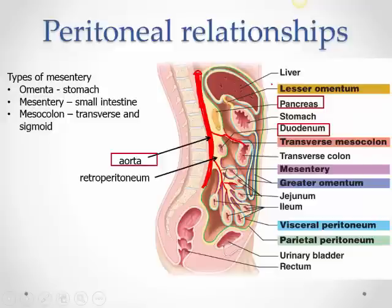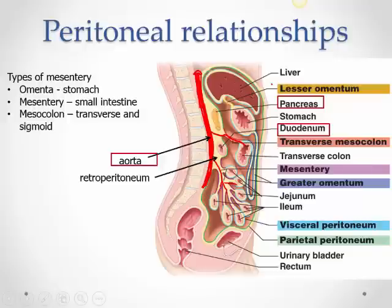The double fold of peritoneum called mesentery has different names in different areas. When related to the stomach it is called omenta — lesser omentum and greater omentum. In relation to the small intestine it is called mesentery itself. In relation to the transverse and sigmoid colon it is called mesocolon. All are double folds of peritoneum that allow blood vessels, nerves, and lymphatics to pass through and suspend the organ.